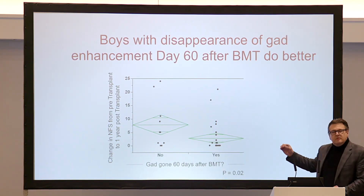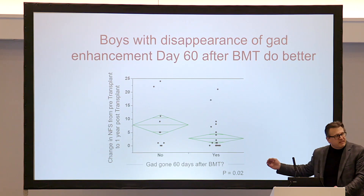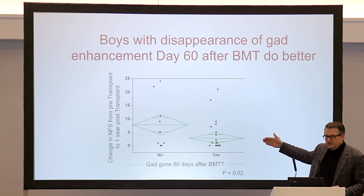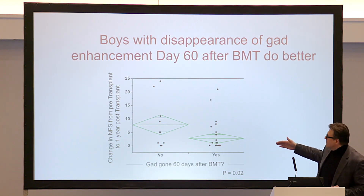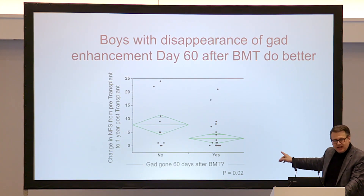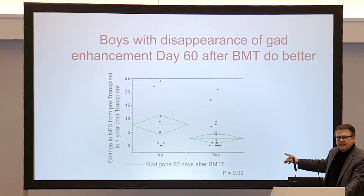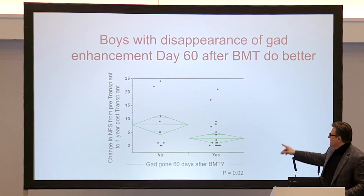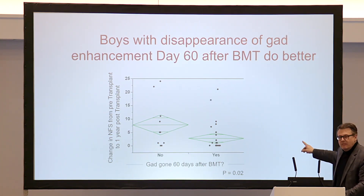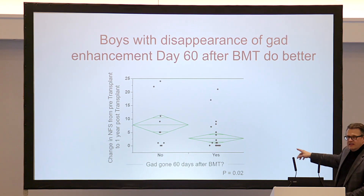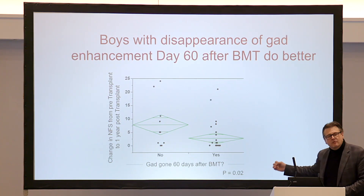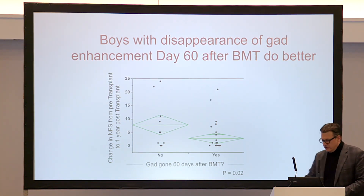Is it important that the gadolinium goes away? This graph shows change in neurologic function score from pre-transplant to one year post, asking: is the gadolinium gone at 60 days after transplant? Patients for whom the answer was yes have a much better neurologic outcome than those for whom the answer is no. The faster we can get the gadolinium to go away, the better the neurologic outcome.